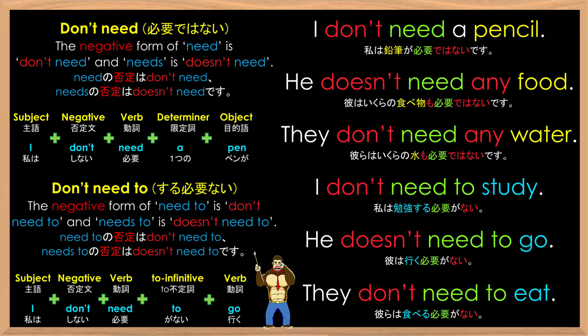Let's review the sentences one more time: I don't need a pencil. He doesn't need any food. They don't need any water. I don't need to study. He doesn't need to go. They don't need to eat.